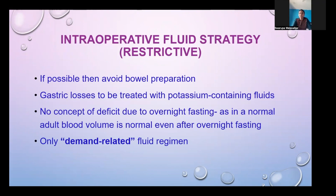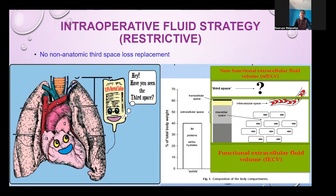For blood loss, additional fluid replacement is 1:1, and crystalloid to blood is 1.5:1. Avoid bowel preparation if possible. Gastric losses are treated with potassium-containing fluids. There is no concept of deficit due to overnight fasting, as normal adult blood volume is maintained even after overnight fasting. The classic third space has never been anatomically localized — it is simply fluid shifted within the functional extracellular compartment from intracellular to interstitial space, so there is no specific fluid loss to replace.